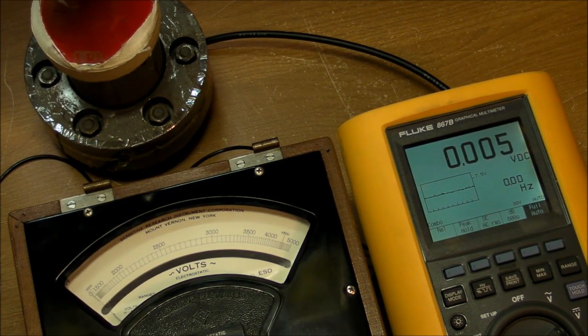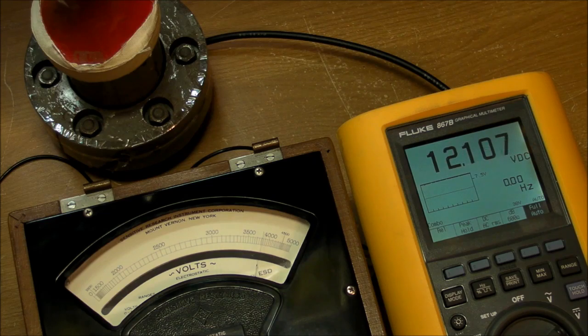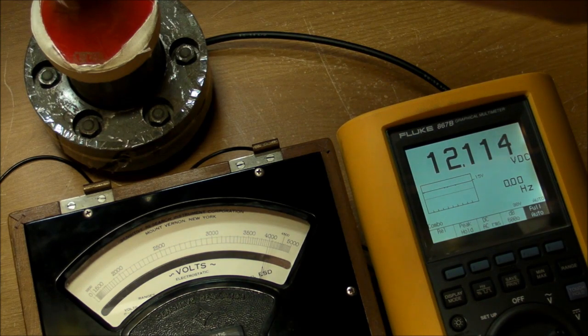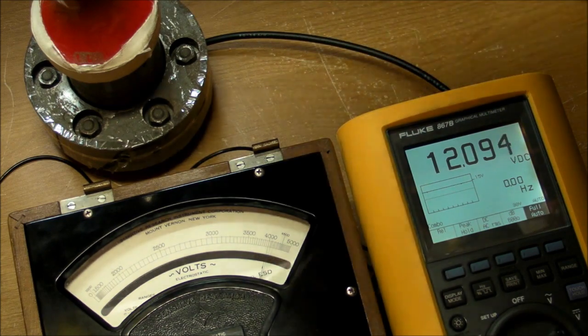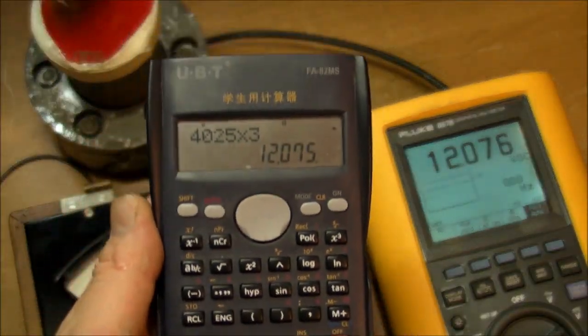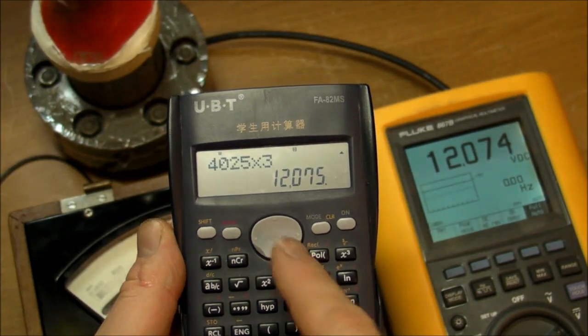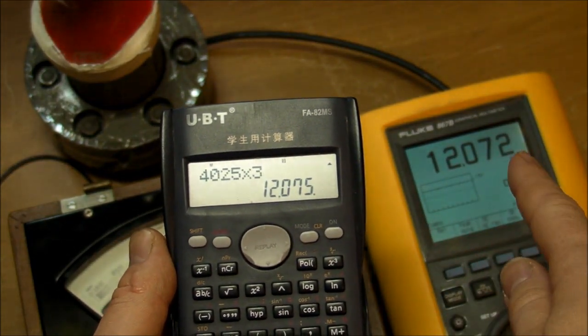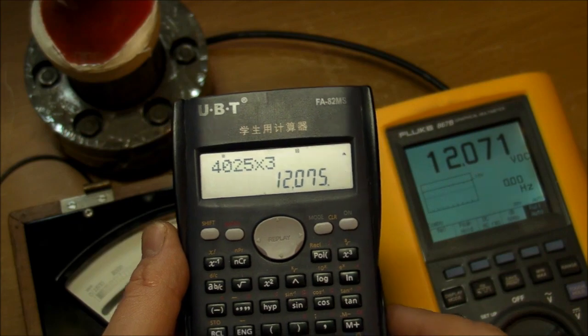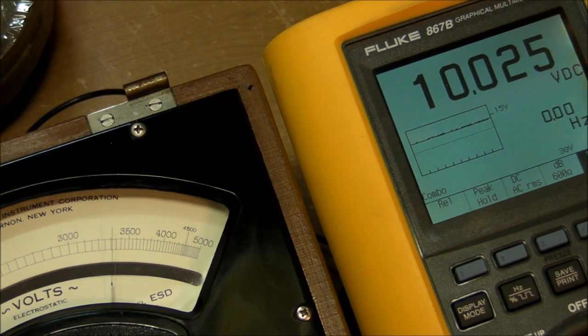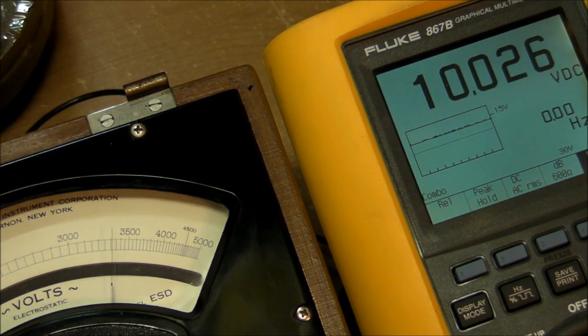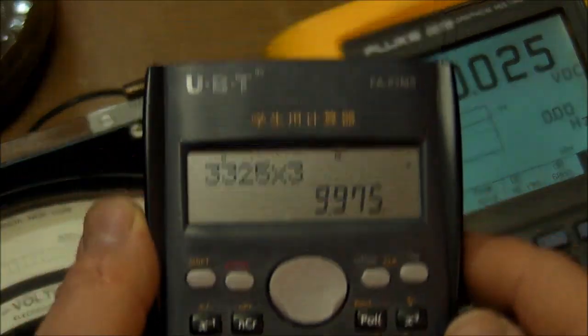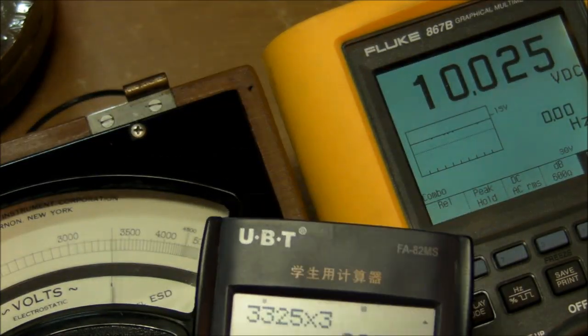Let's turn it on and we should be seeing 4000 volts on the electrostatic. Yeah, I'm seeing basically 4020, 4025 volts. Now here we have a much closer match, look at that, 12075 versus 12072 on that one, beautiful.